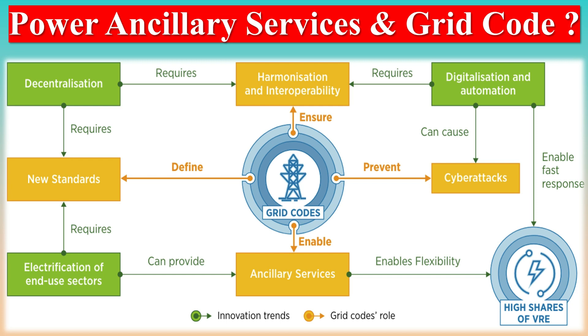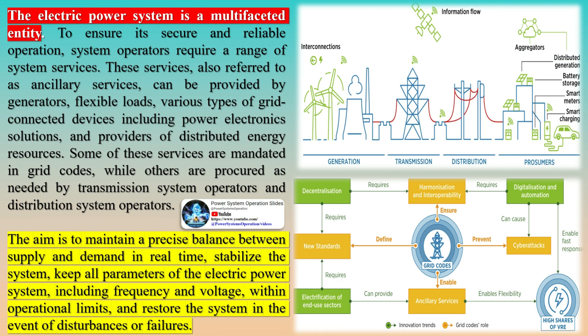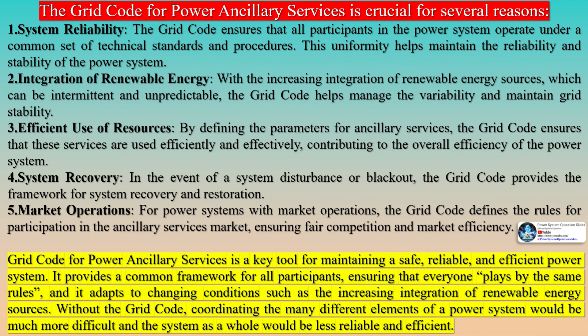The electric power system is a multifaceted entity. To ensure its secure and reliable operation, system operators require a range of system services. These services, also referred to as ancillary services, can be provided by generators, flexible loads, various types of grid-connected devices including power electronics solutions, and providers of distributed energy resources. Some of these services are mandated in grid codes, while others are procured as needed by transmission system operators and distribution system operators.